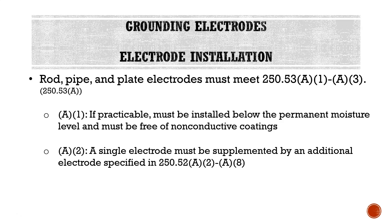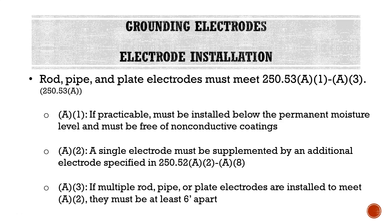A2: a single electrode must be supplemented by an additional electrode specified in 250.52 A2 through A8. In other words, if we're using a rod, pipe, or plate electrode, we have to use some other type of electrode with it as well. A3: if multiple rod, pipe, or plate electrodes are installed to meet A2, they must be spaced at least six feet apart. A typical installation in a residential application is to install a ground rod, then per A2, since you used a single rod electrode, you install an additional electrode — commonly a second rod. Per A3, they must be spaced at least six feet apart.